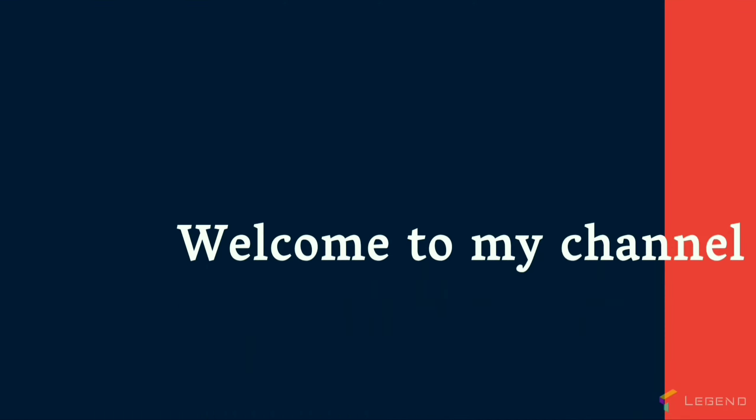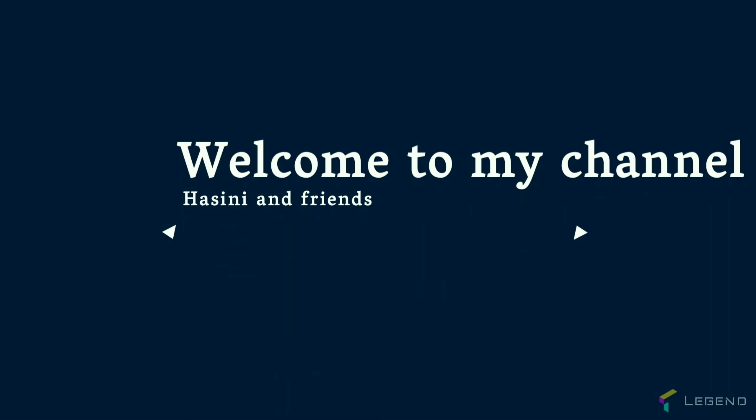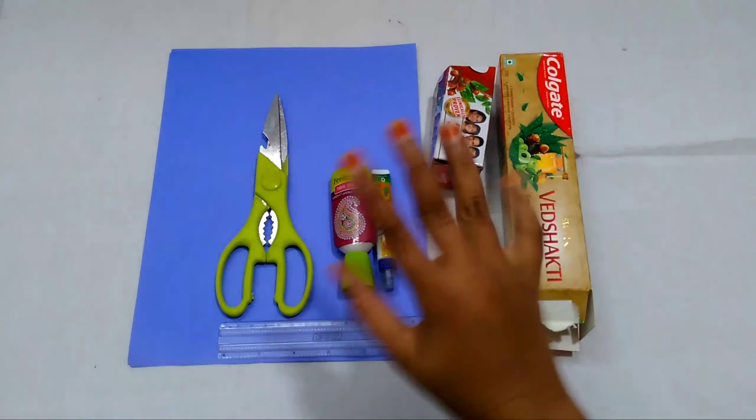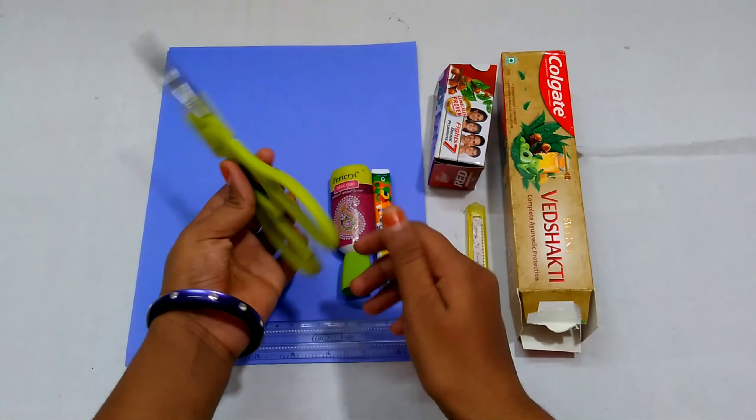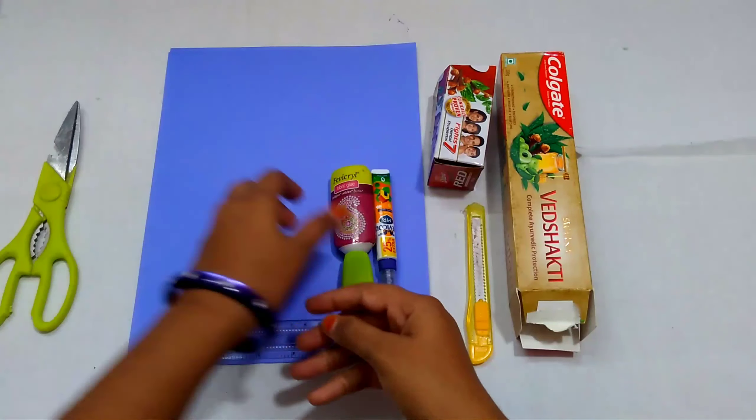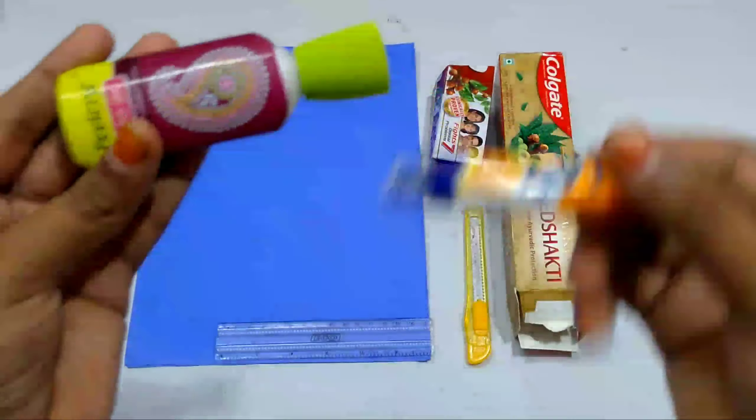Hi friends, welcome to Hashmi Influence channel. Today I am telling about how to make a pencil box with empty toothpaste box. Let's start. Required materials: scissor, glue any type, measuring scale, color papers, toothpaste empty box.